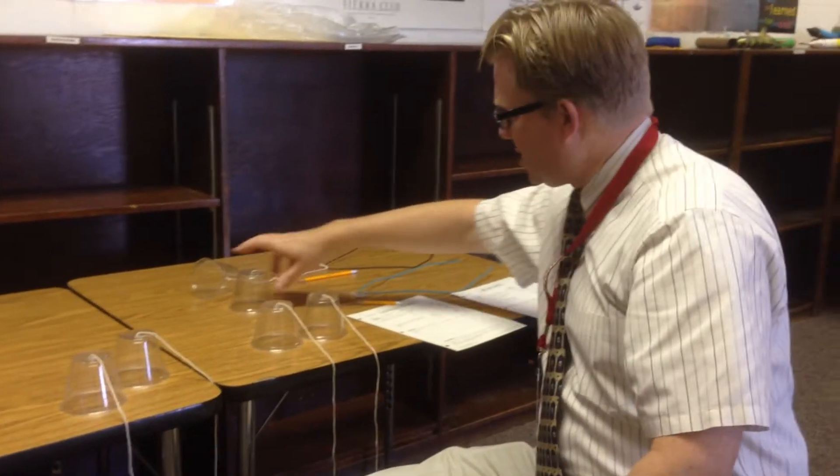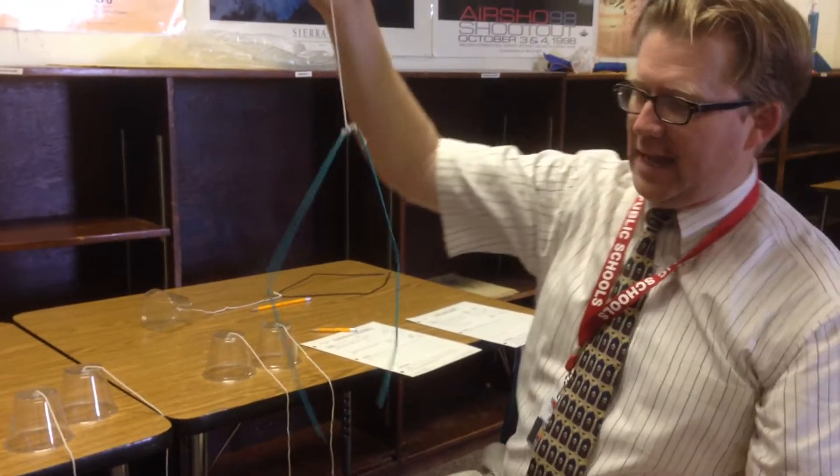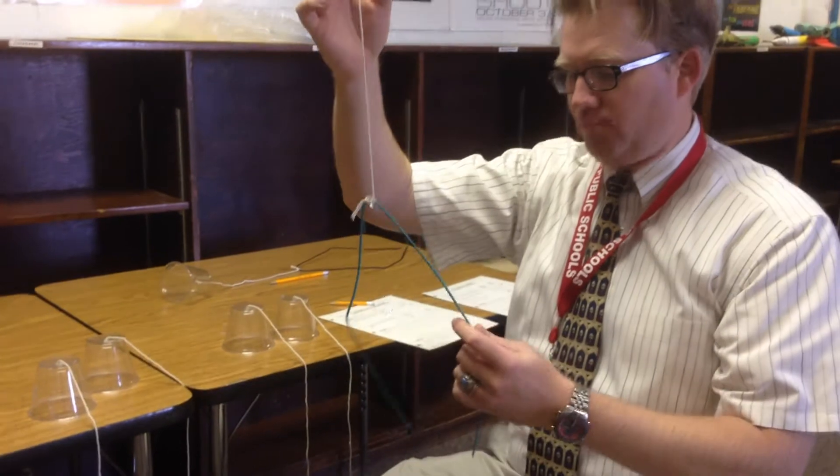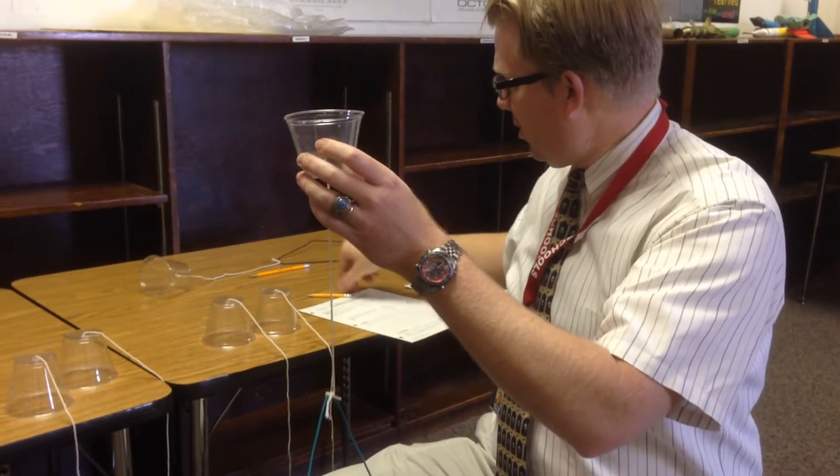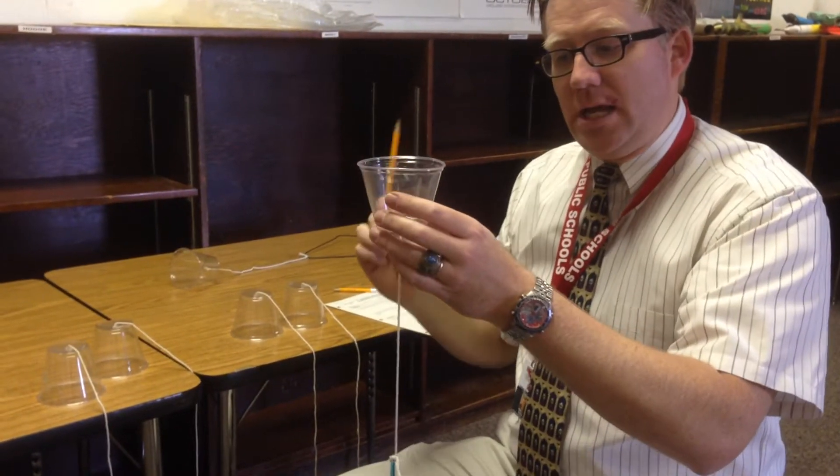The second thing you're going to use is called the long gong and this is a clothes hanger that is basically attached to a cup and you're also going to use a pencil.